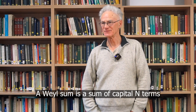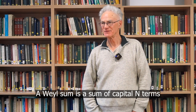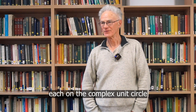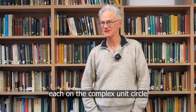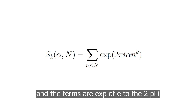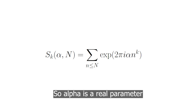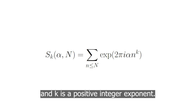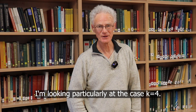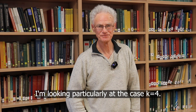A Weyl Sum is a sum of N terms, each on the complex unit circle, and the terms are exp of 2 pi i alpha n to the k. So alpha is a real parameter and k is a positive integer exponent. I'm looking particularly at the case k equals 4.